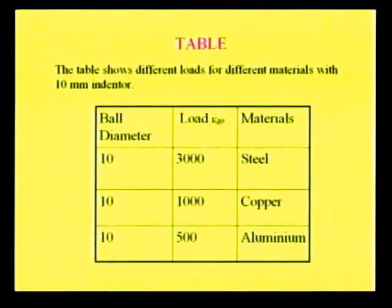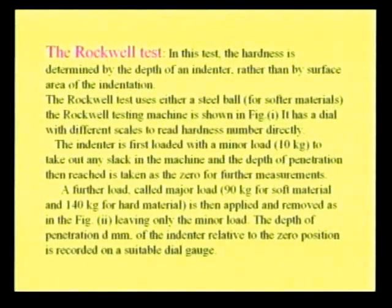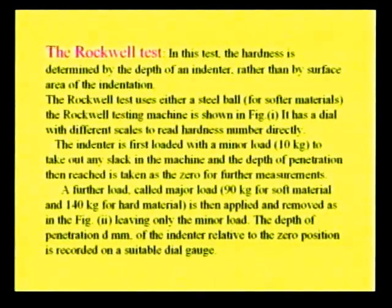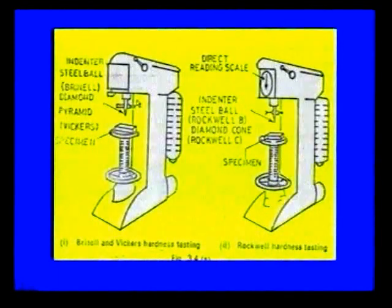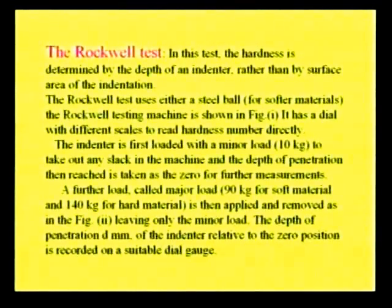In the Rockwell test, the hardness is determined by the depth of indenter penetration rather than by the surface area of indentation. The Rockwell test uses either a steel ball for softer materials or a diamond cone for harder materials. The testing machine has a dial with different scales to read the hardness number directly, whereas in the Brinell hardness test we calculate the number using a formula — in the Rockwell hardness tester, the value is read directly from the scale.